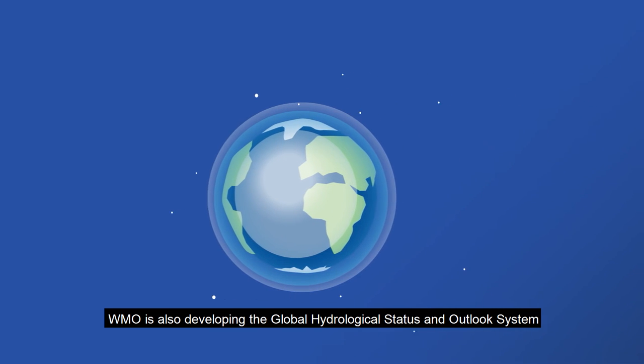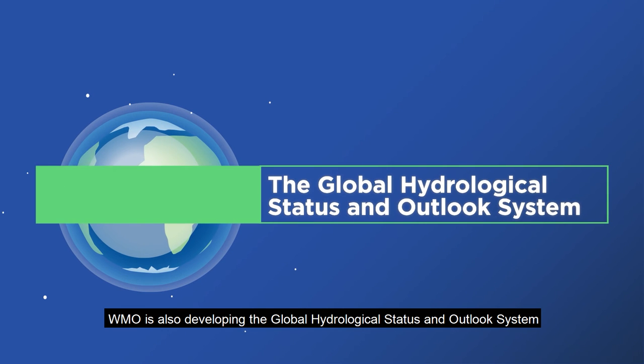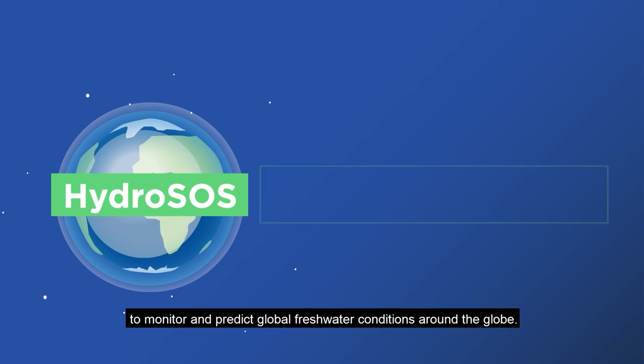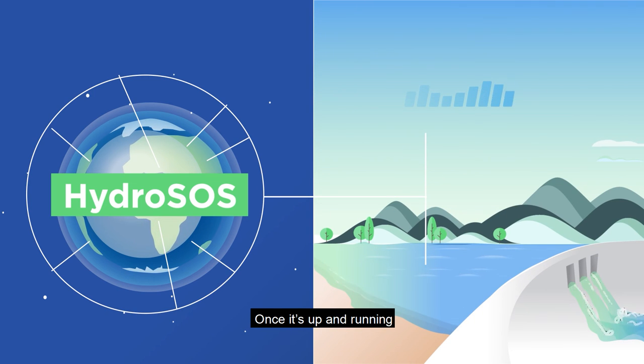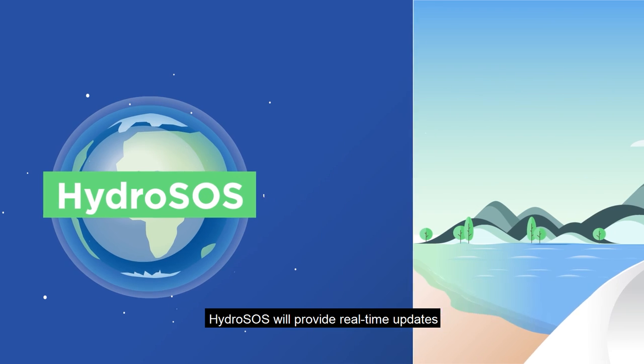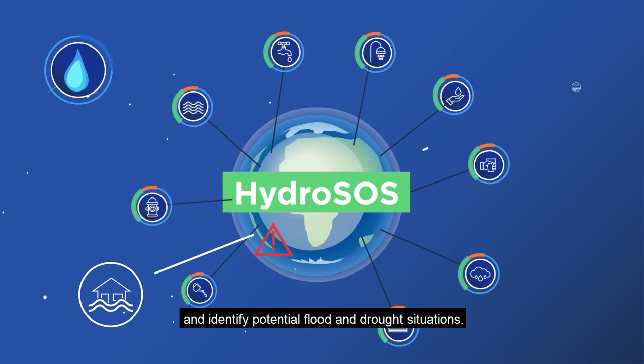WMO is also developing the Global Hydrological Status and Outlook System to monitor and predict global freshwater conditions around the globe. Once it's up and running, Hydro SOS will provide real-time updates and identify potential flood and drought situations.